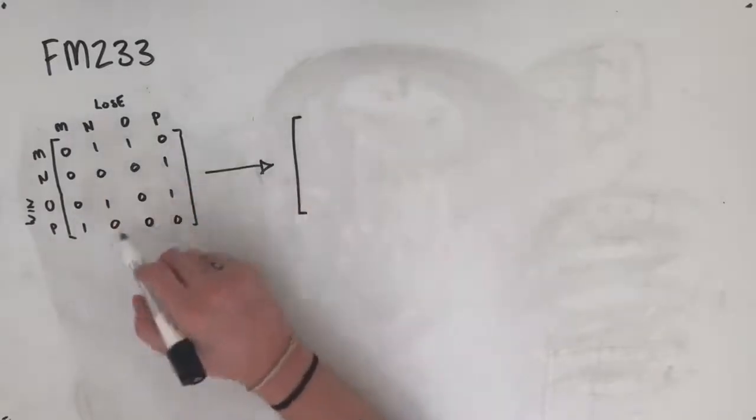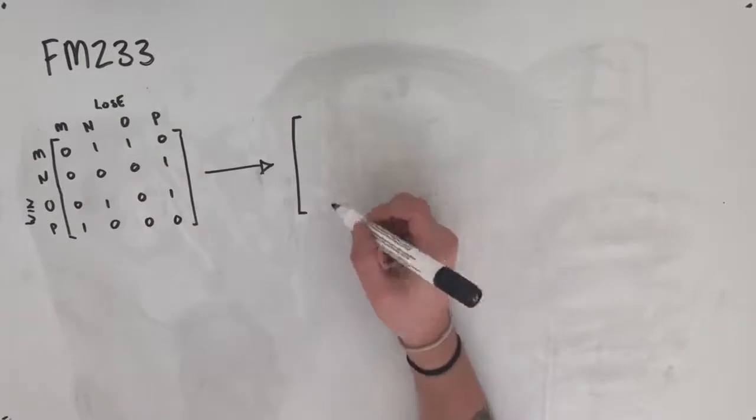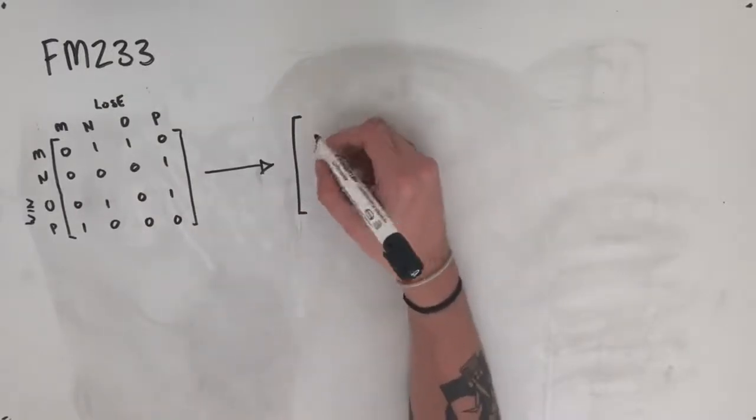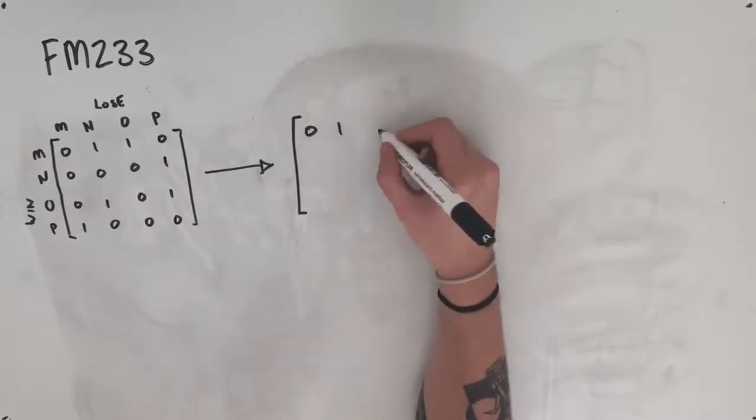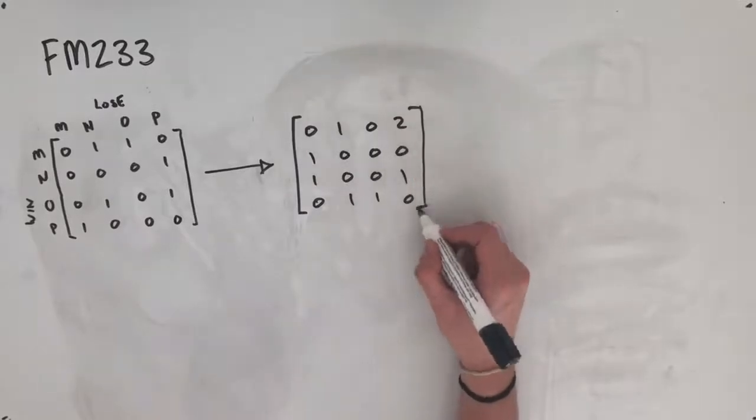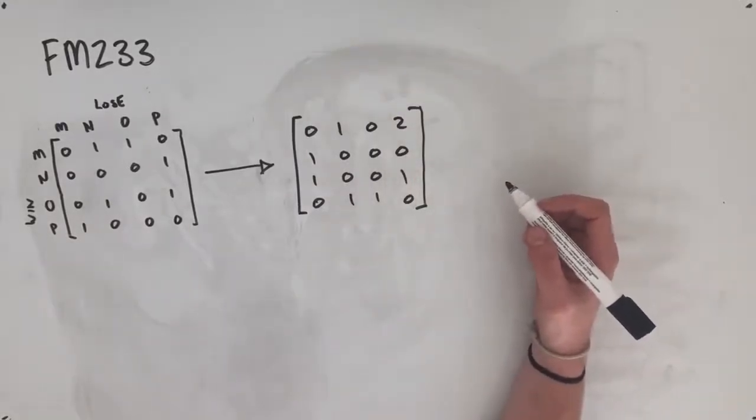So if we were to take this dominance matrix and square that, then we would get this matrix here, which also shows the two-step dominances of each player.